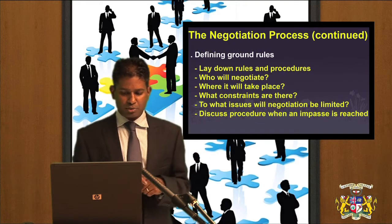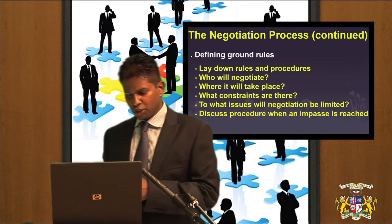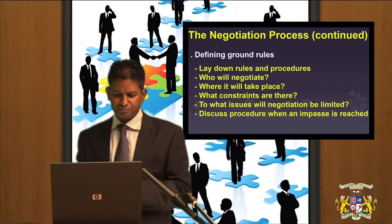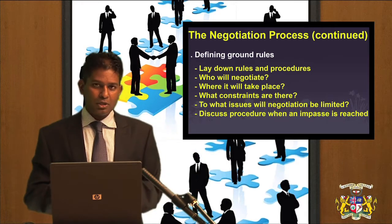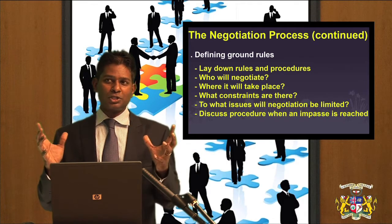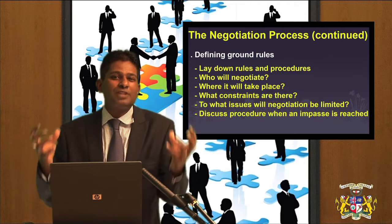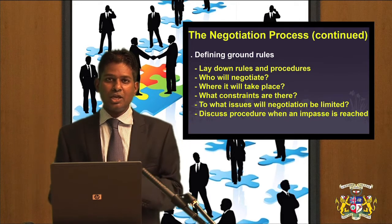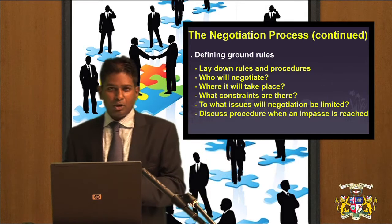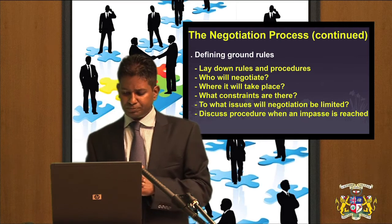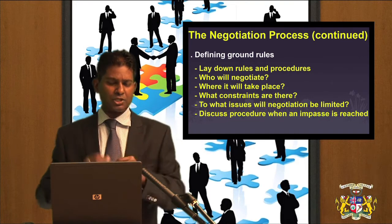The second stage in the negotiation process is defining ground rules. It helps in exchanging initial proposals and demands. Lay down rules and procedures — it always helps. Be clear about who will negotiate; you do not want every person in the negotiating team coming up with conflicting opinions and ideas. You need to sort these out before you get to the negotiating table. Also consider where the negotiation will take place and what constraints you are likely to encounter.